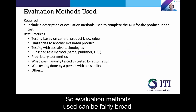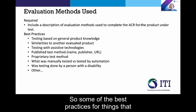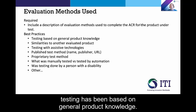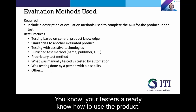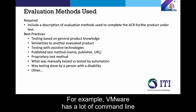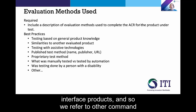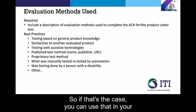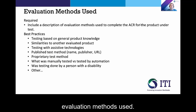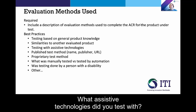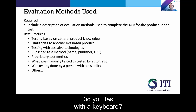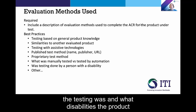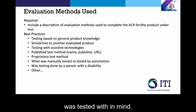Evaluation methods used can be fairly broad. Some of the best practices include whether testing has been based on general product knowledge — your testers already know how to use the product — or if it's similar to another product that you've evaluated. For example, VMware has a lot of command line interface products, and we refer to other command line interface VPATs because they're all tested fairly similarly. What assistive technologies did you test with? Did you test with screen readers? Did you test with a switch? Did you test with a keyboard? All of these things give the reader an impression of how thorough the testing was and what disabilities the product was tested with in mind.